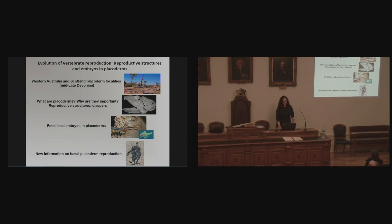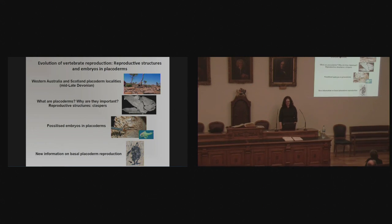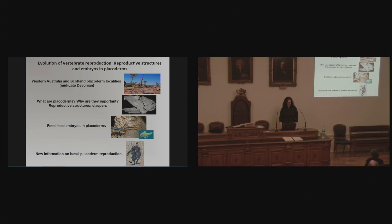I'm going to break this presentation down into four parts. First, I'll be showing you slides of the placoderm localities in Scotland, Estonia, and Western Australia — mid to late Devonian in age. Then I'll talk about what placoderms are and why they're important. I'll discuss reproductive structures known as claspers in placoderms, but also in other fish like sharks. Then fossilized embryos in placoderms, finishing with new information on basal placoderm reproduction.